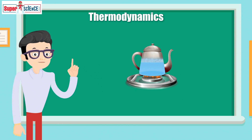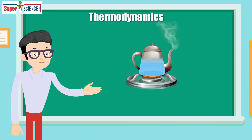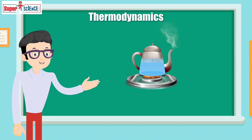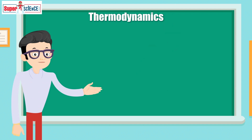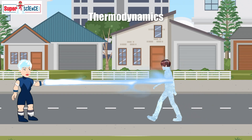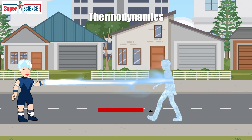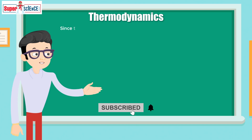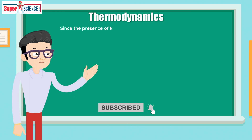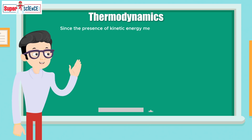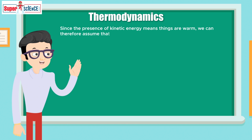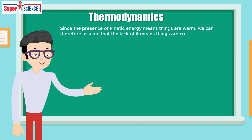This makes the particles go faster, which in turn turns them into a gas. Killer Frost does the opposite — when she uses her power on an object, she takes away the kinetic energy from that object. This changes things, since the presence of kinetic energy means things are warm.